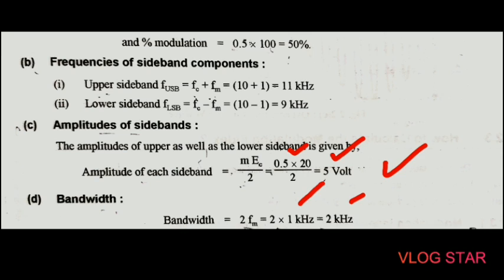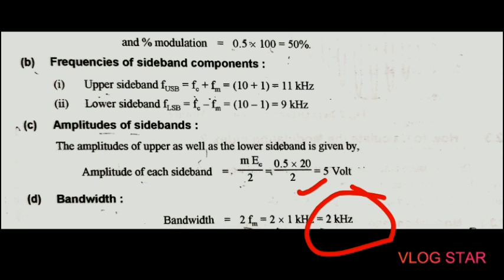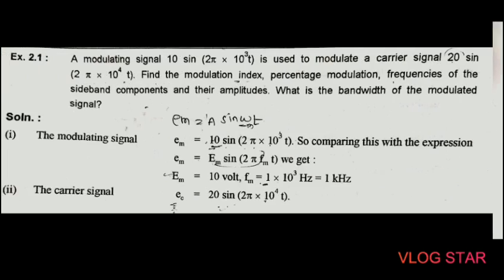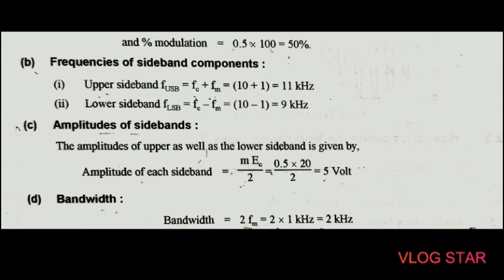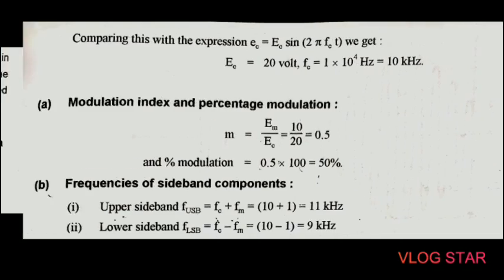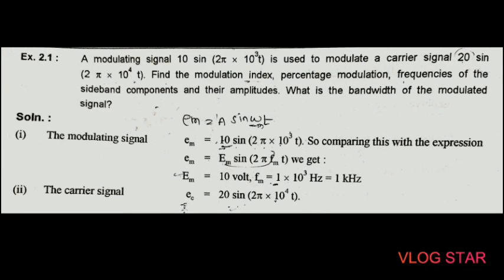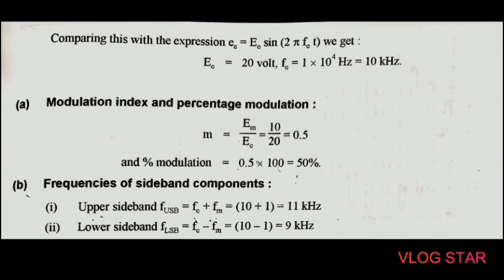The last parameter is bandwidth. The bandwidth of the AM signal is 2 × f_m = 2 × 1 kHz = 2 kHz. This is our final answer. In this way we can calculate the modulation index, percentage modulation, frequencies of sideband components, amplitudes of sidebands, and bandwidth, when the modulating signal and carrier signal are given.